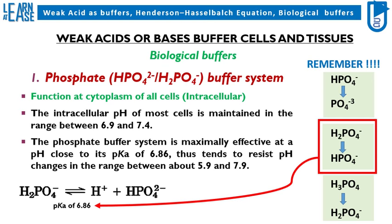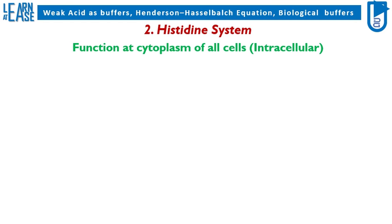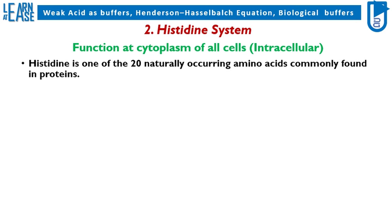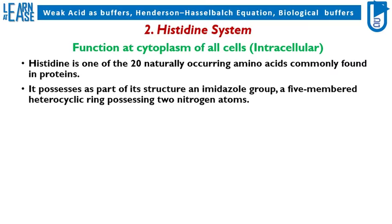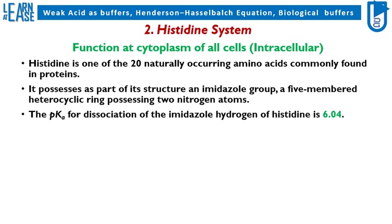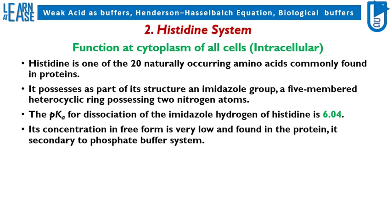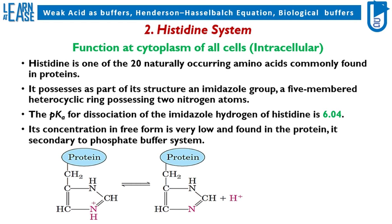Second, the histidine system. This system functions at the cytoplasm of all cells, thus it is an intracellular buffer. Histidine is one of the 20 naturally occurring amino acids commonly found in proteins. It possesses as part of its structure an imidazole group, a five-membered heterocyclic ring possessing two nitrogen atoms. The pKa for dissociation of the imidazole hydrogen of histidine is 6.04.